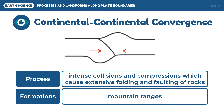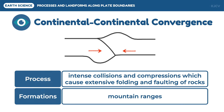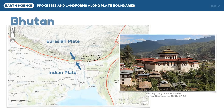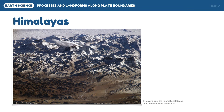This causes the formation of mountain ranges. This boundary is evident in South Asia, particularly in Nepal, India, Bhutan, and Southwest China. These countries are known for being mountainous because of the collision of the Indian plate with the Eurasian plate, resulting in intense mountain building as in the Himalayas mountain range. The Himalayas is the largest mountain range in the world, bordering Nepal and China, and houses the world's highest peak, Mount Everest.